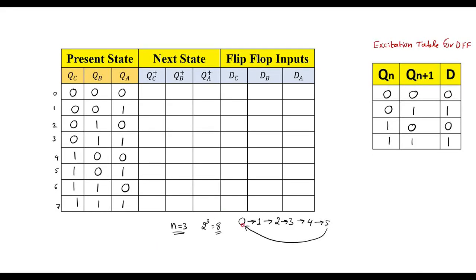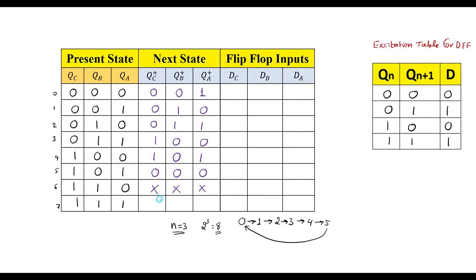When present output is 0, next state output is 1. When it is 1, it should become 2 (010). When it is 2, next state is 3. When it is 3, next state is 4. When it is 4, next state is 5. When it is 5 (101), next state is 0 (000). For states 6 and 7, the flip-flop values may be 0 or 1 — these are don't care conditions, represented by X.